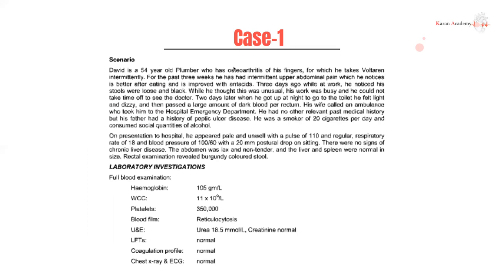Case one: David is a 54-year-old plumber with osteoarthritis for which he takes Voltaren, an NSAID. For the past three weeks he's had intermittent upper abdominal pain, which is better after eating and improved with antacids. Three days ago he noticed his stools were loose and dark. Two days later when he got up at night to go to the toilet, he felt light and dizzy, passed a large amount of dark blood per rectum, and his wife called an ambulance. His father had peptic ulcer disease. He smokes 20 cigarettes a day and drinks social quantities of alcohol.